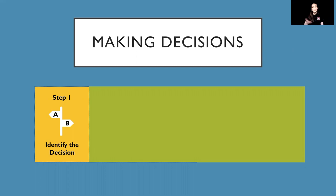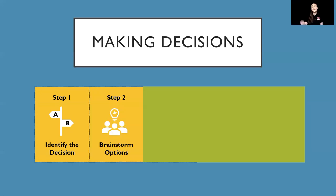We'll continue with our example of the assembly. I'm in charge of the posters, and my teacher lets me know that I can choose two other students in the class to help me make posters. Step one focuses on identifying my decision — I need to choose which two students are going to help me with those posters. Step two focuses on brainstorming my options. Option one is choosing two of my best friends so we can hang out and have a good time, even though I know their artwork isn't the best. Option two is choosing two other students whose artwork I know is spot on.